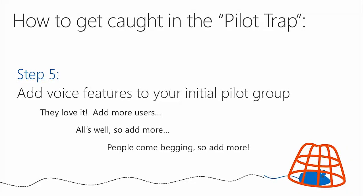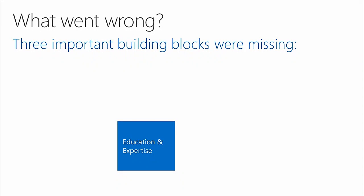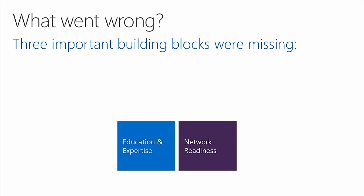We've run into a number of situations where businesses have inadvertently piloted themselves to a dead end — going forward is difficult and going backwards is difficult. We're going to talk about how to avoid it, some remedies, and some real-world cases. What went wrong boils down to three basic things: education and expertise, network readiness, and the device selection process.